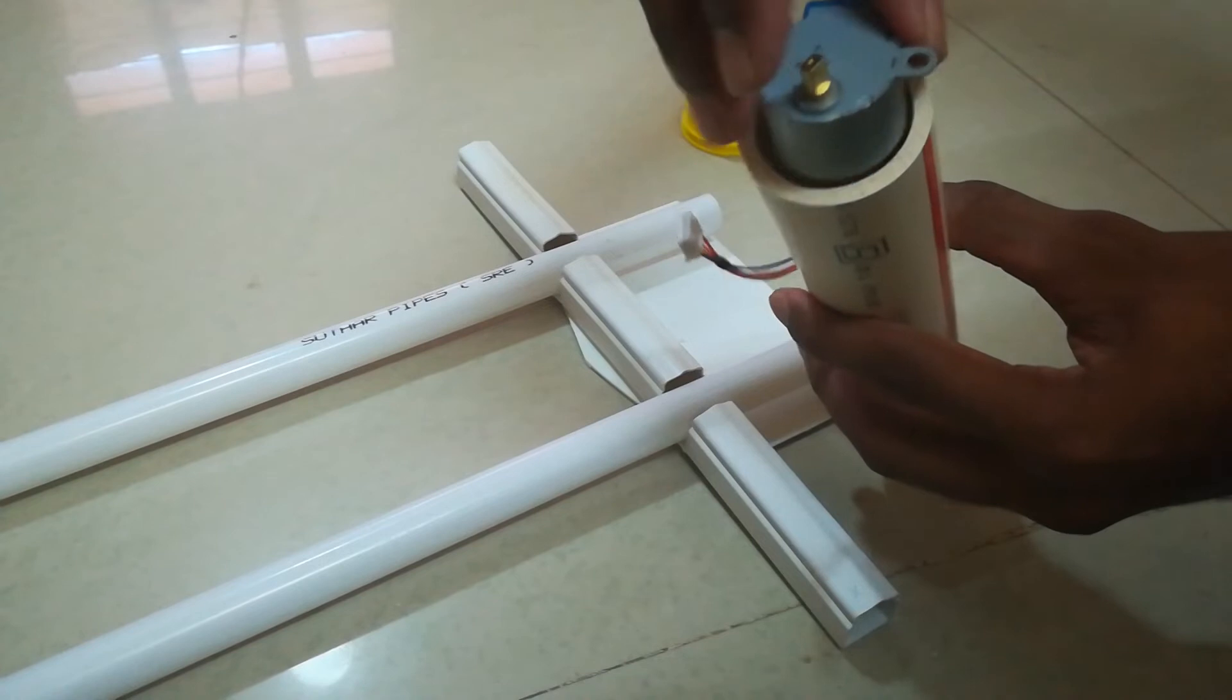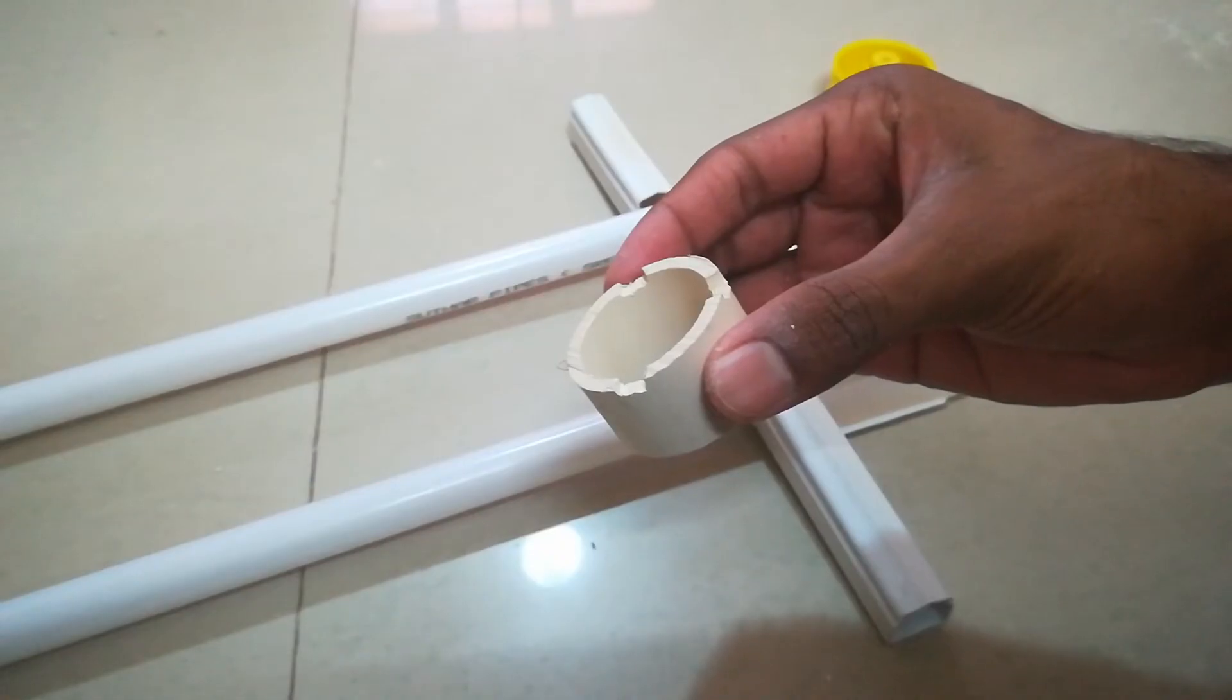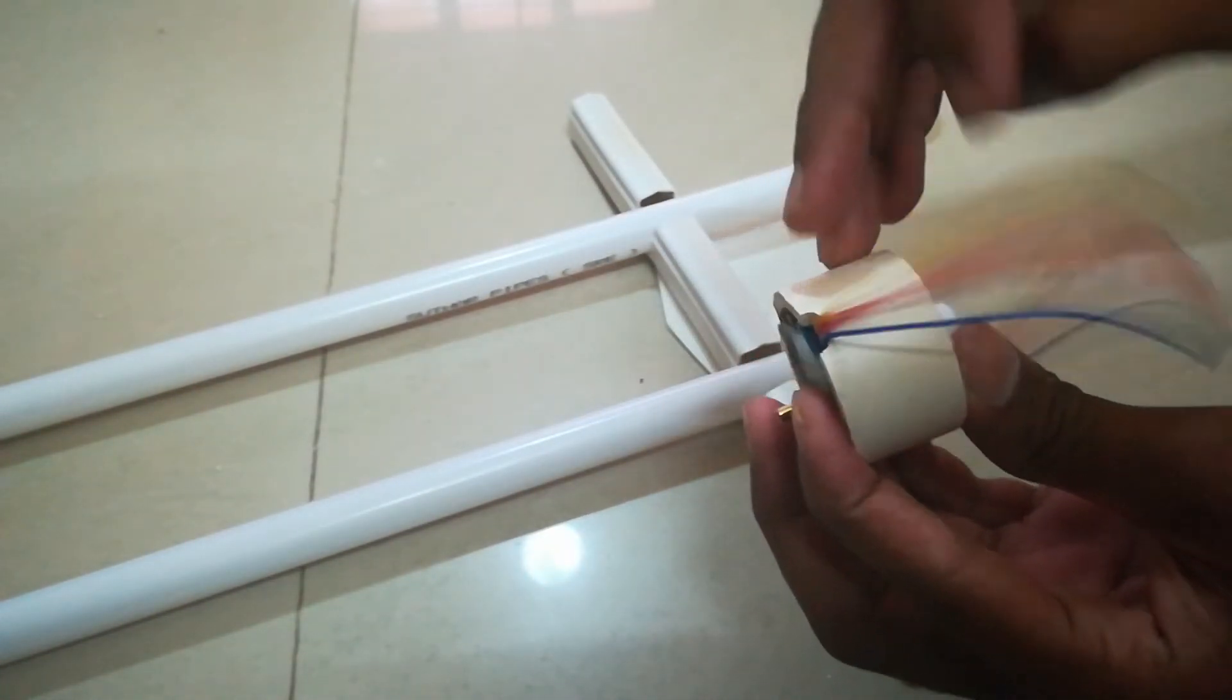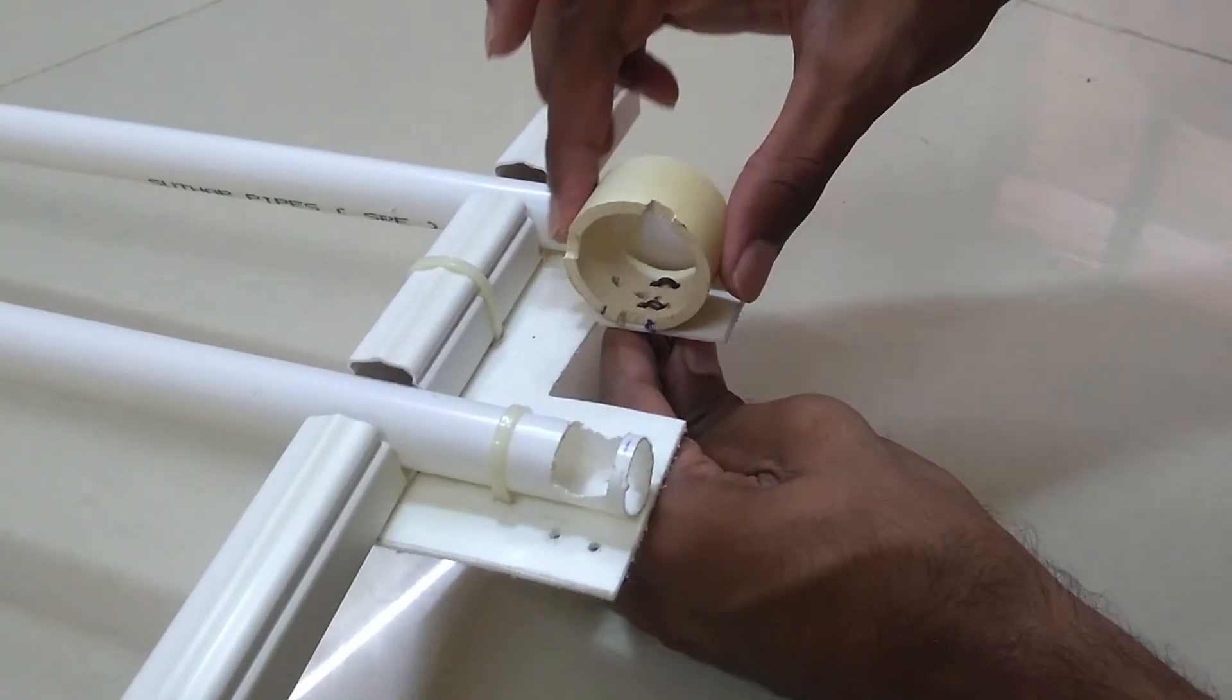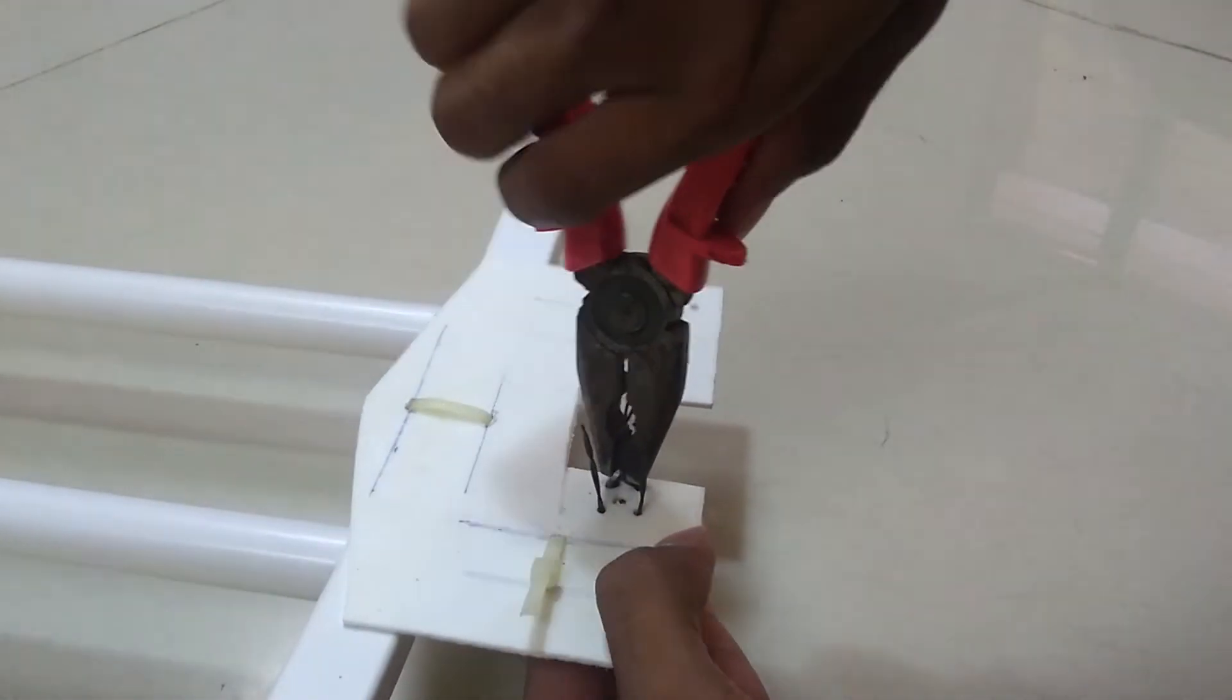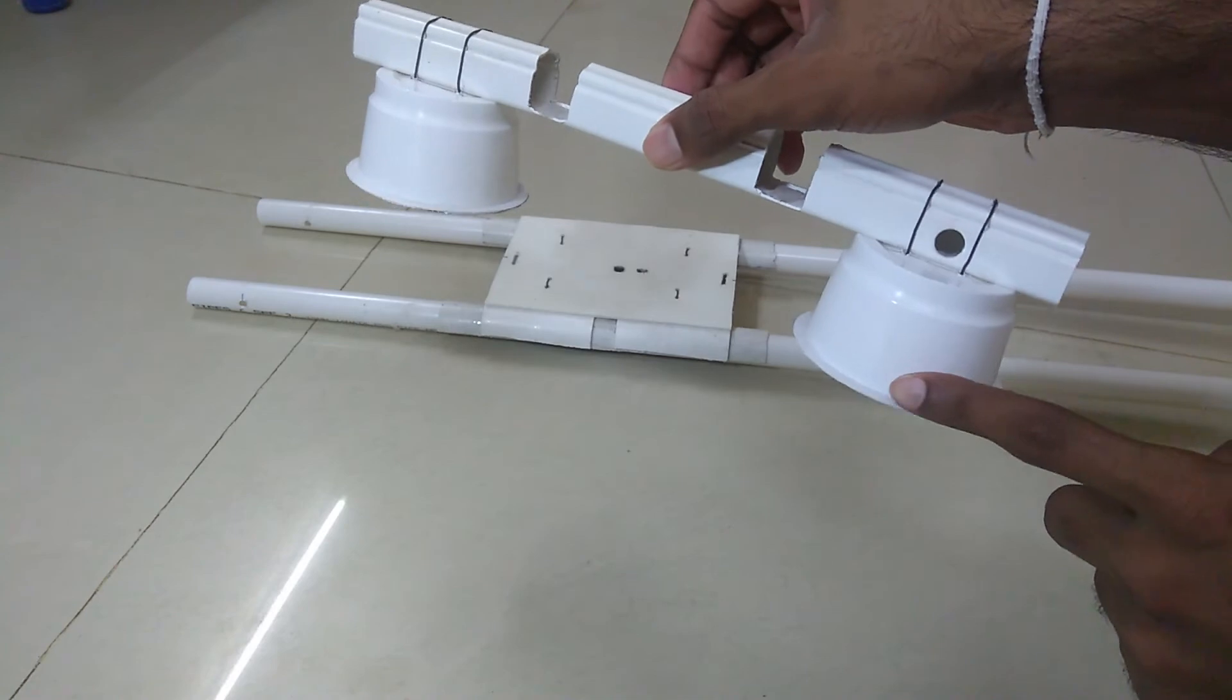Now take a PVC pipe of diameter 1.5 inches to fix the motor to the structure. You can decide your own way to fix the motor to the structure. Now make some holes in it and tie the PVC pipe to the structure.